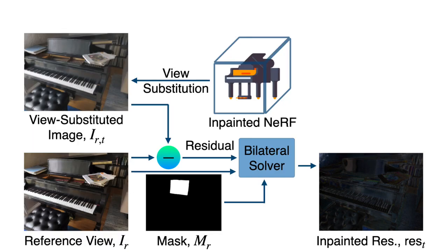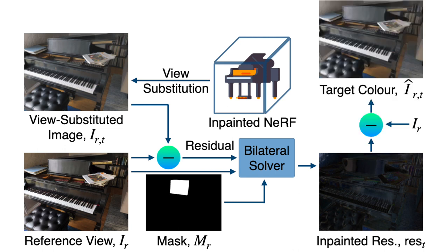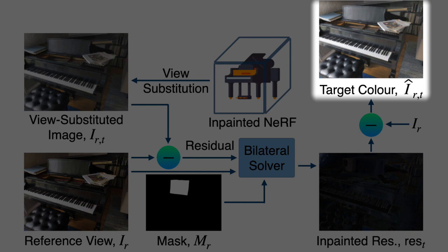In this stage, we are in general propagating the information about the view-dependent effects from outside of the mask to the inside. The inpainted residual is then subtracted from the reference view to get the target colors.